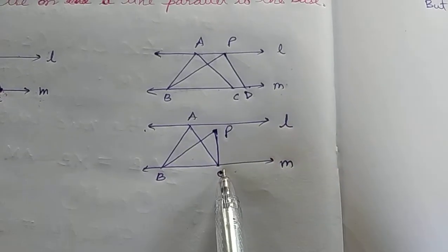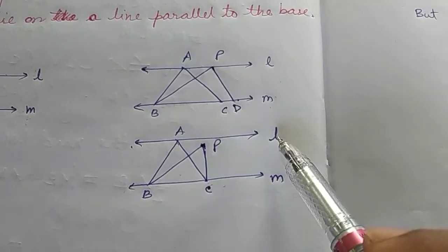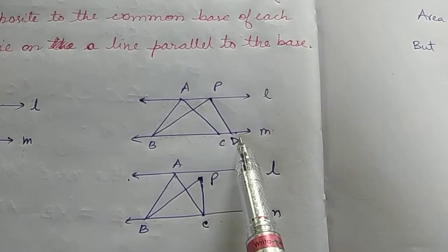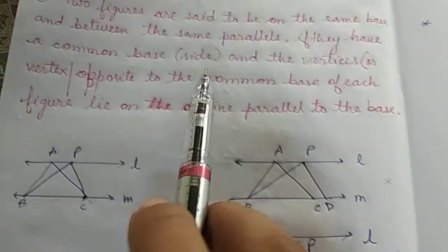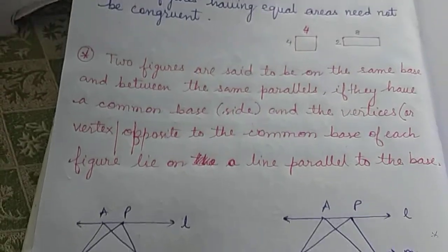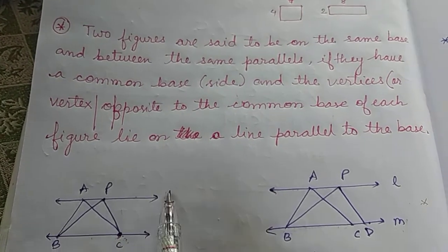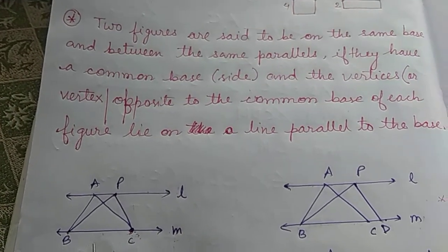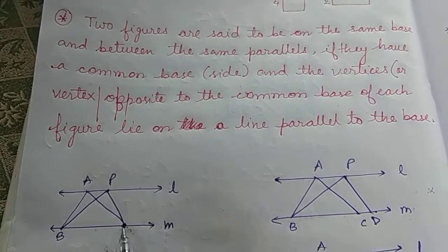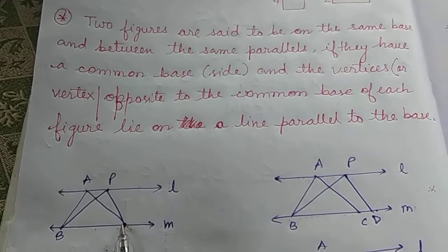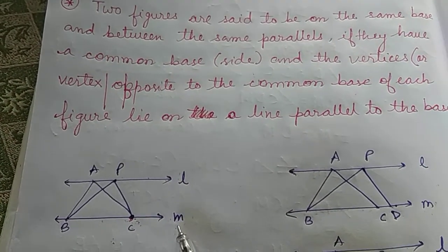Also, even if the base may be the same, if the two vertices are not on the same parallel line — for example, vertex P is just below the line — the condition is not met. So, to summarize: two figures ABC and PBC are said to be on the same base BC and between the same parallels L and M if they have a common base BC, and the vertices A and P opposite to base BC each lie on the line L, which is parallel to the base M.